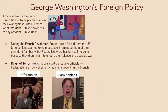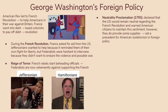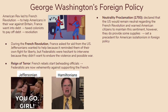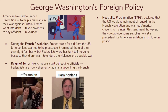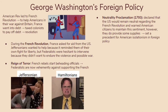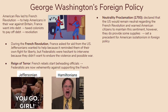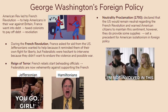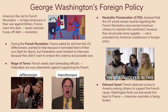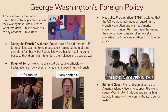George Washington decided to do essentially nothing, issuing the Neutrality Proclamation of 1793, which declared that the U.S. would remain neutral regarding the French Revolution and warned American citizens to maintain that sentiment — though they did supply the French with some basic goods. This proclamation set a precedent for American isolationism in foreign policy for decades. American neutrality was tested by Edmond Genêt, a French diplomat who came to America asking citizens to support the French cause. Washington found out and sent him back to France, showing how resolved Washington was to remain neutral.